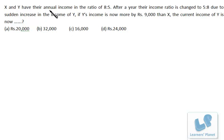X and Y have their annual income in the ratio 8 to 5. Initially it is 8 to 5. After a year,